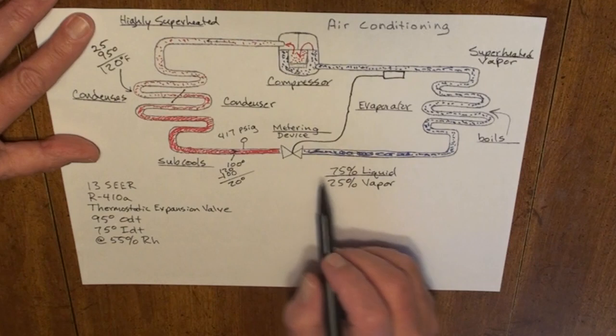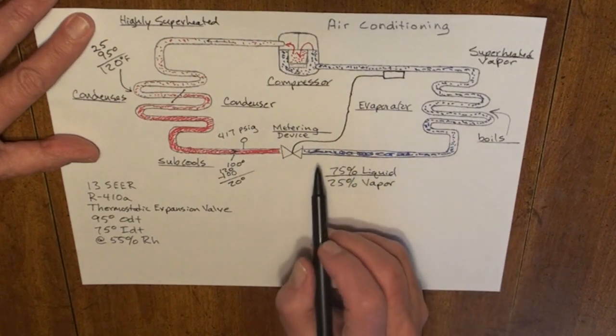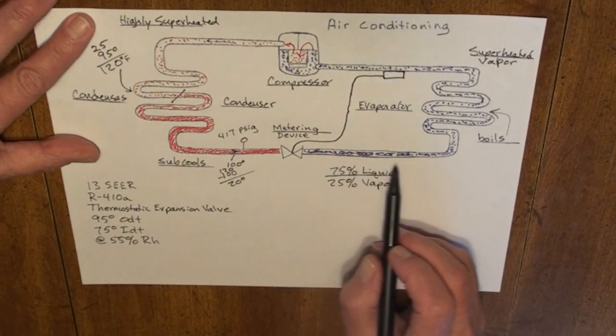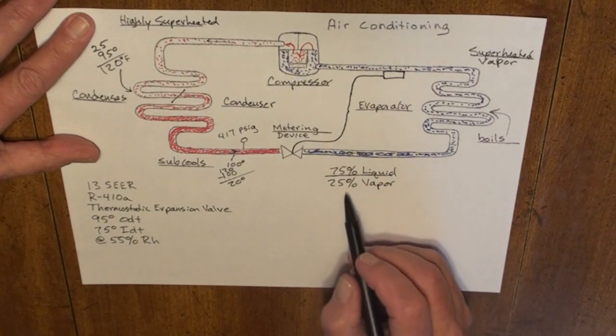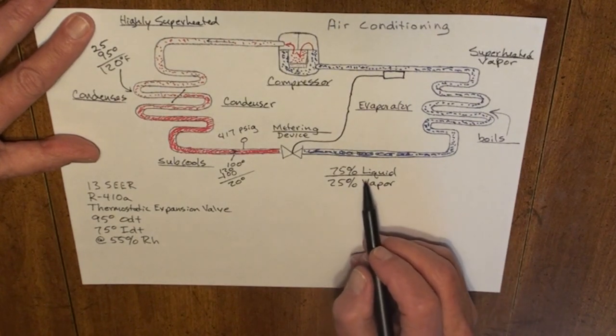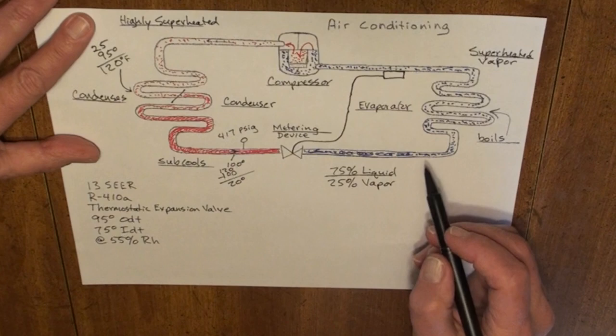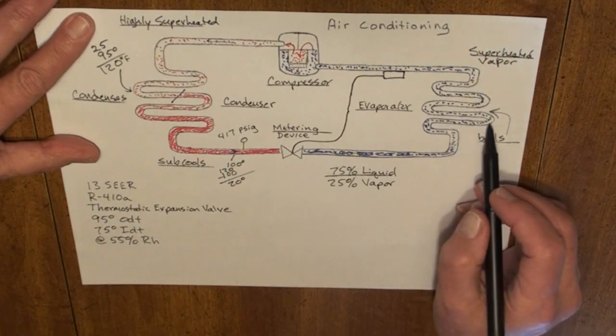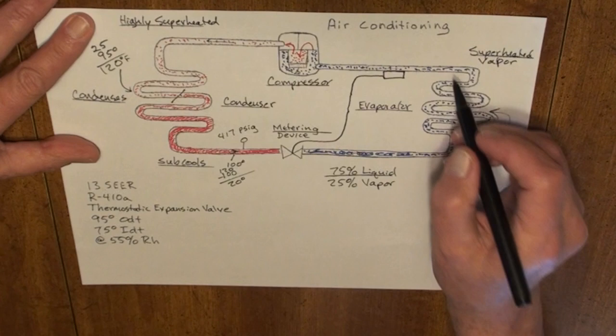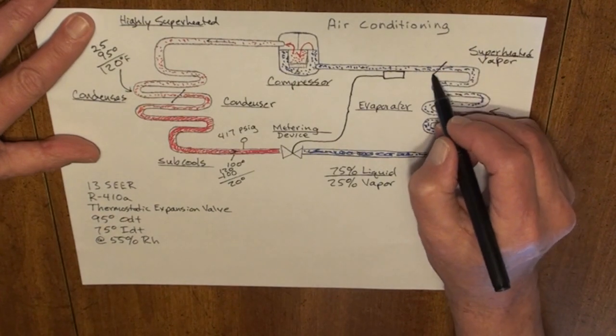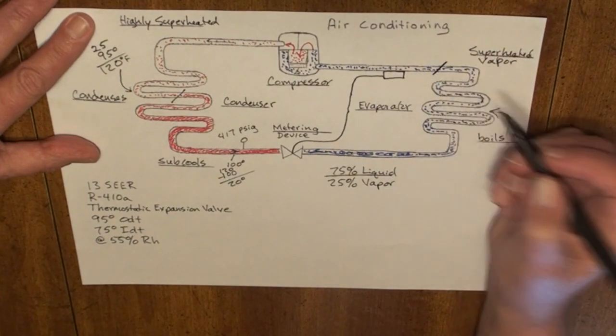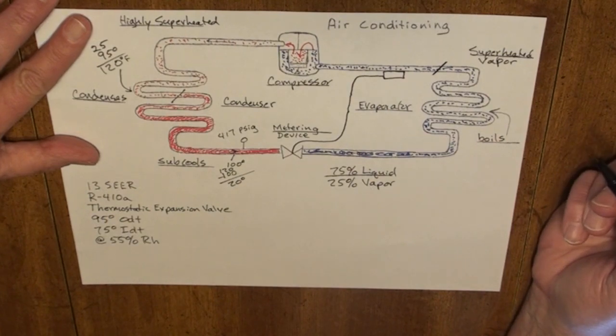So it enters the low side of the system. The refrigerant immediately begins to boil. It boils as a 75% liquid, 25% vapor. It boils, leaves the system as a superheated vapor.